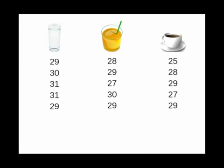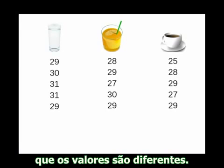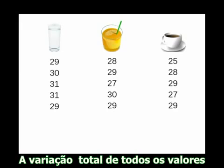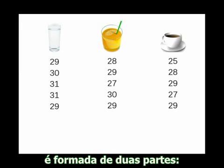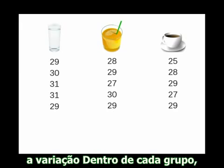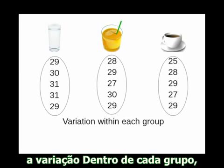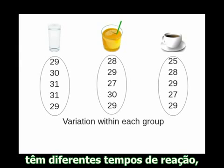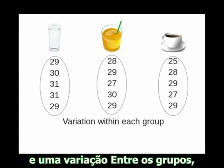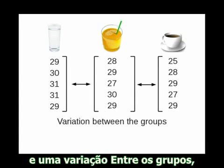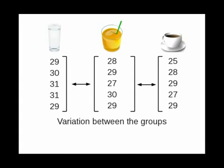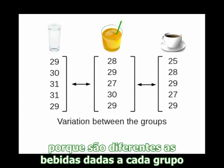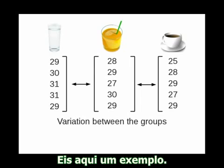When you do the experiment, the scores won't all be the same. The total variation of all the scores is made up of two parts: the variation within each group, because the people in each group have different reaction times, and the variation between the groups, because the drinks you gave each group are different.